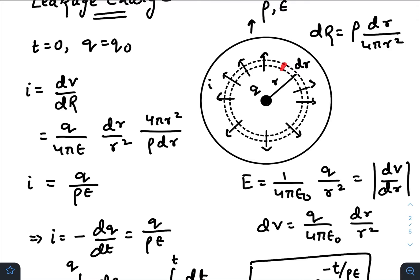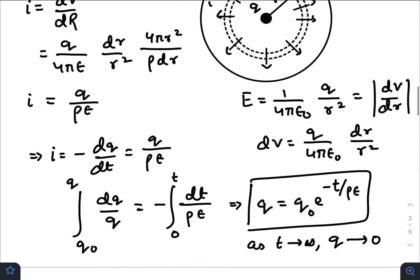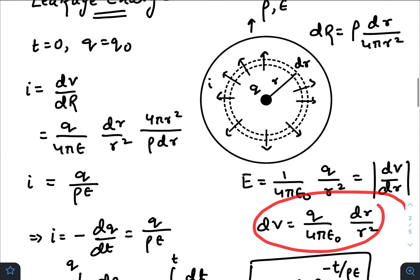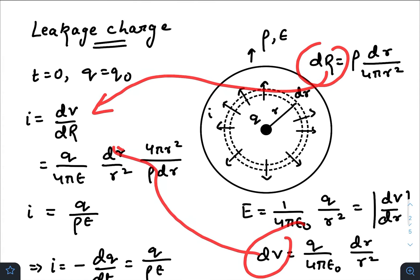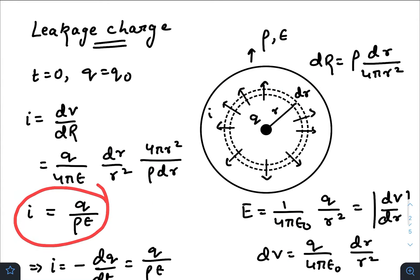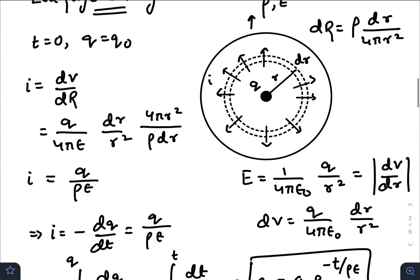The potential difference between these two surfaces would be dV. Electric field equals 1 over 4π ε₀ times q over r² equals dV/dr, so dV is this one. We got the value of potential difference, we got the value of resistance. Just plug these two values here; you will get the expression for current.